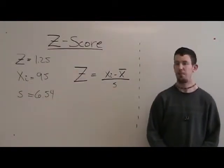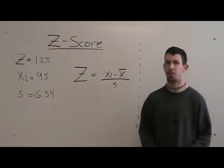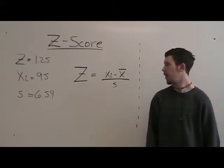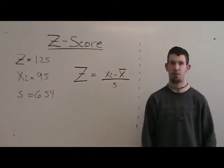In this third example, the z-score is 1.25, the xi is 95, and the standard deviation is 6.54.